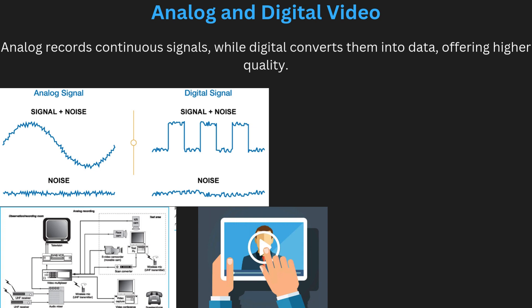Now, analog and digital video. Video can be either analog or digital. Analog video records continuous signals, like those used in older TVs, broadcasts, and VHS tapes. In contrast, digital video converts these signals into discrete data, which is easier to store, edit, and transmit. Digital video is commonly used today because it offers higher quality and more efficient storage. Examples of digital video formats include MP4 and AVI. The shift from analog to digital has greatly improved the quality and accessibility of video content.